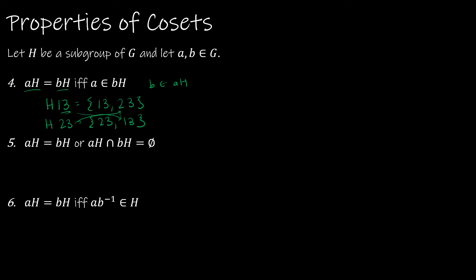Properties 4 and 5 relate to the fact that cosets partition the elements of G. Property 5 says AH equals BH or their intersection is empty. H13 and H23 are the same; H1 gives {1, 11} and H11 gives {11, 1} — the same set. But H11 and H23 have no elements in common, so their intersection is the empty set.